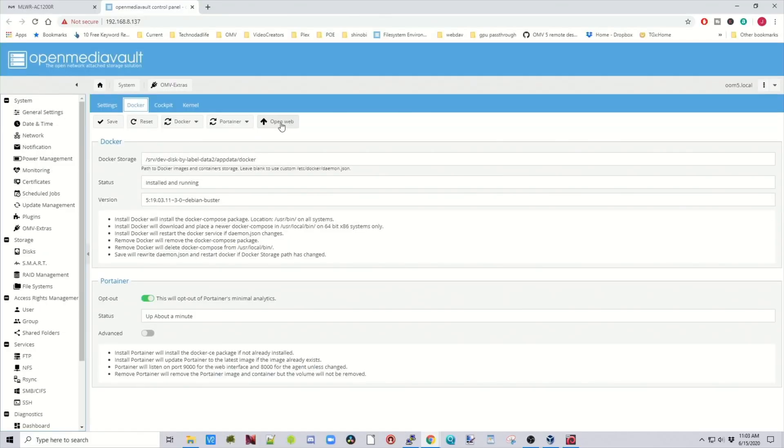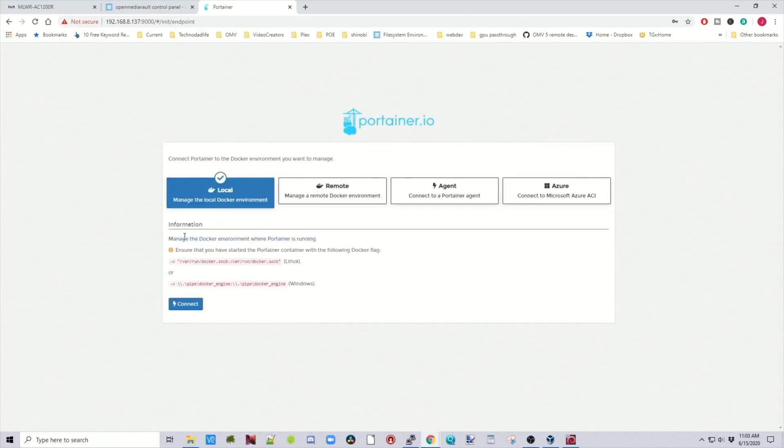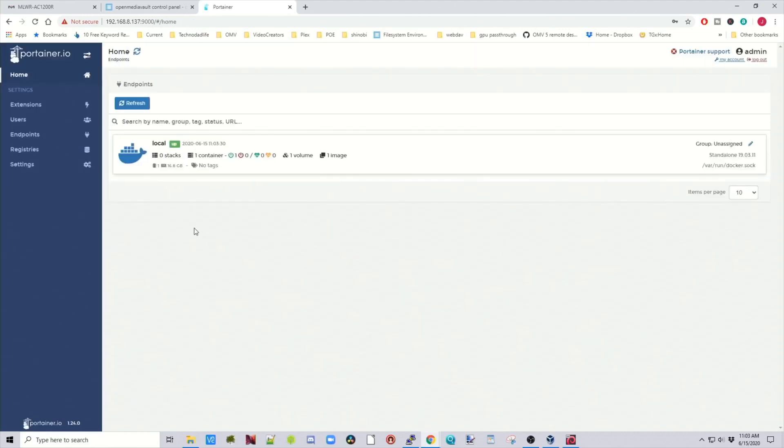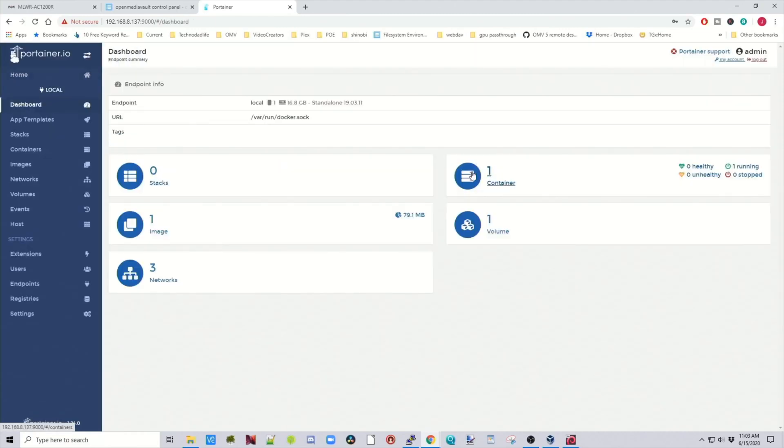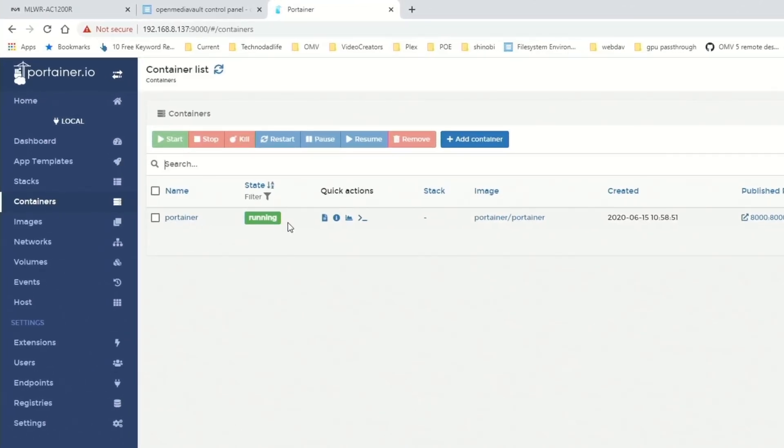So open Portainer. And you'll have to re-log in again because we're creating a new image. Click on Local and then Connect. Click on Local and then Containers. And there's our Portainer running.